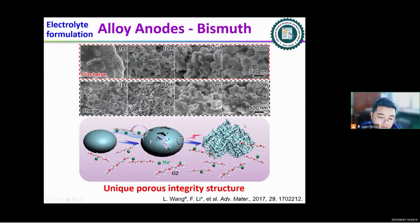The SAED patterns of discharged and charged bismuth electrodes also prove this mechanism. Then, we use SEM to evaluate the structure evolution. From here, we can find the bulk bismuth is developed into a porous integrated structure during cycling. This unique porous integrated structure guarantees superior kinetics of sodium ions in the bismuth electrode, and a good wettability of electrolytes, which ensures the good electrochemical performance.